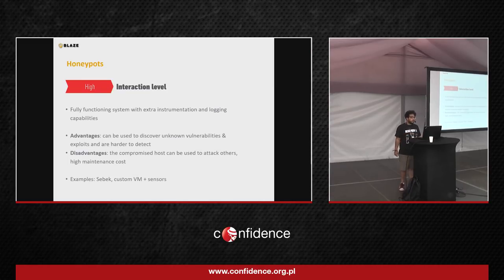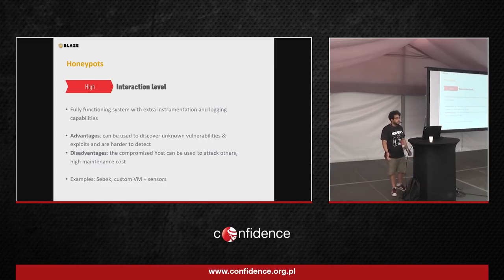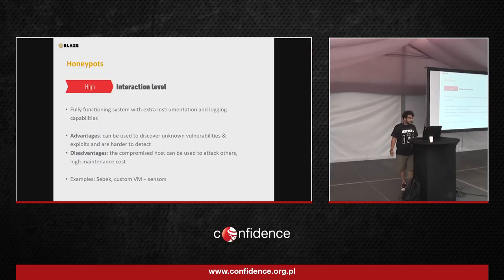High interaction honeypots are usually fully functioning systems with extra logging or instrumentation capabilities to gather information. An advantage is you can use them to discover unknown vulnerabilities because it's a real system — people might use an actual zero-day to try to pop your box. But there's also a very high maintenance cost because it's an actual machine, and the compromised host can be used to attack others. So it's obviously a good idea to isolate it from a firewall perspective.